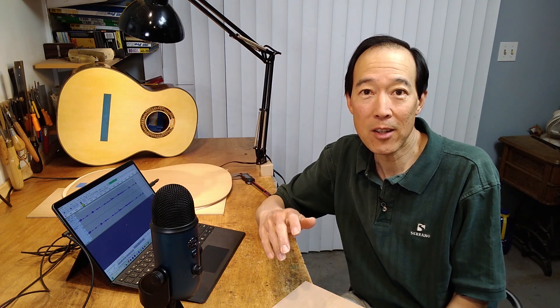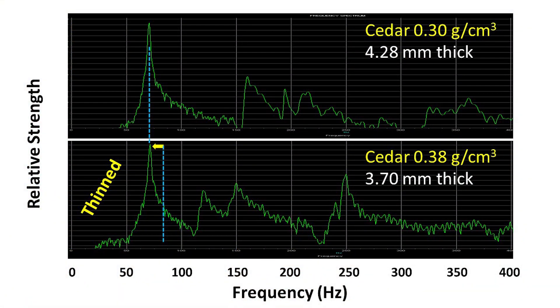Back here at the workbench, what I did over there on the drum sander was thin the plate slowly to sneak up to the frequency of the lower density plate, tapping and monitoring on the computer. Eventually I got to a point where the flexibility was such that the resonant peaks matched up, as you can see in this spectrum. The lower density plate on top had a fundamental frequency at 71 hertz, and by thinning the higher density plate, shown on the bottom, I was able to drop its frequency about 12 hertz to match that of the lower density plate.